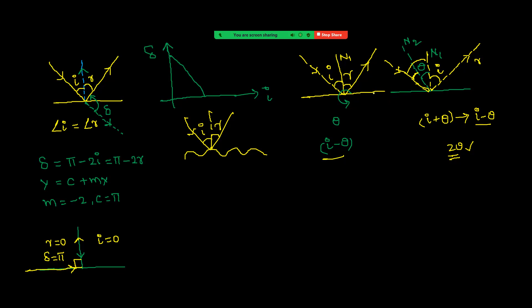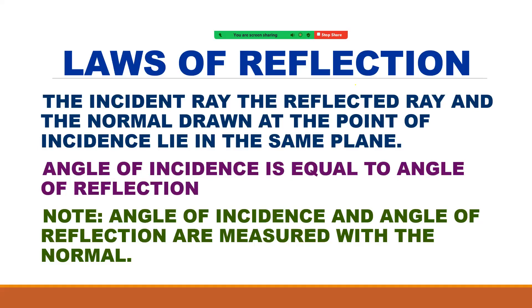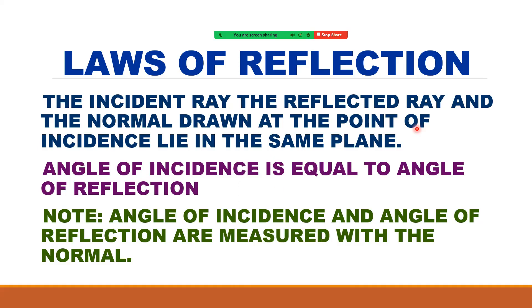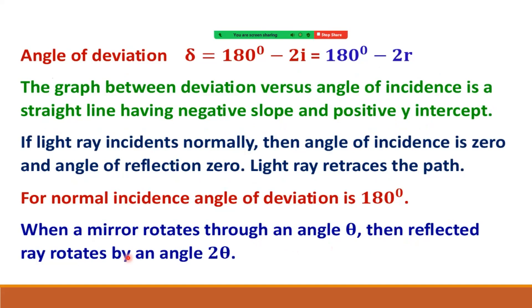Before going to problems, let us summarize the points discussed. The incident ray, reflected ray, and normal at the point of incidence lie in the same plane. Angle of incidence equals angle of reflection — both measured with respect to the normal. The angle of deviation is 180° − 2i, and the graph of deviation versus angle of incidence is a straight line with negative slope.